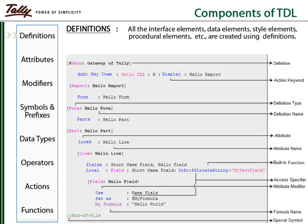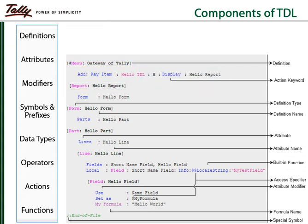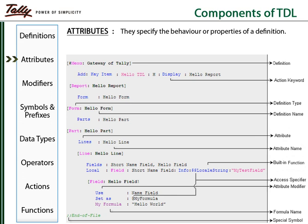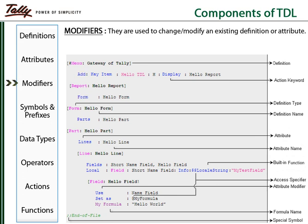Definitions are the basic building blocks of a TDL program — for example, the menu and the report definitions. Each definition is followed by a set of attributes. Modifiers are used to modify the existing definition or attribute; for example, the modifier 'use' helps the programmer to reuse a previous definition.